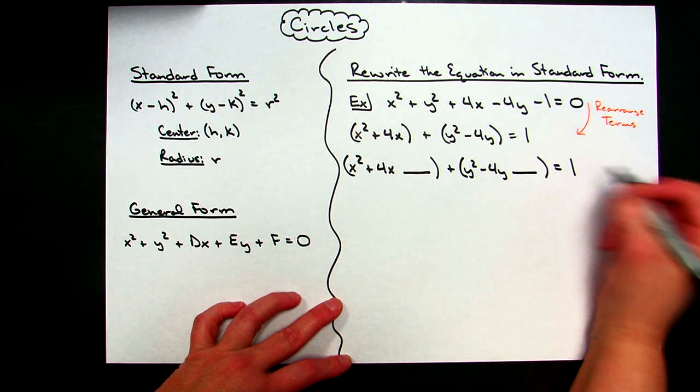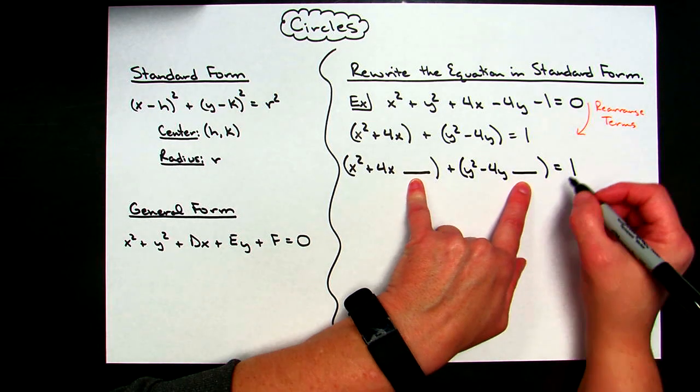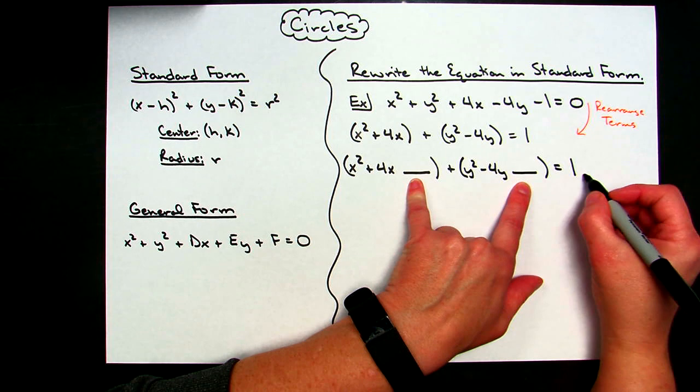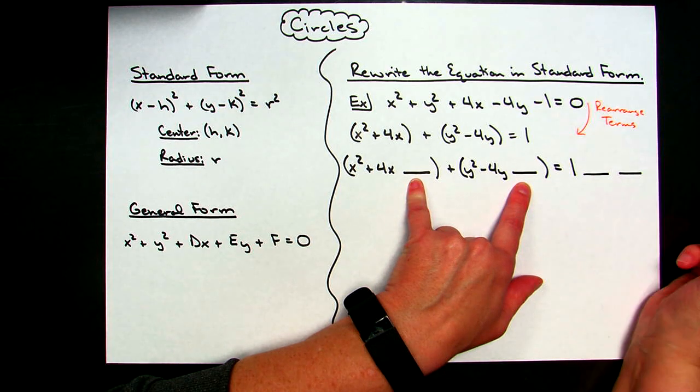I've got a 1 right here. Now, whatever I complete the square in these two places, I have to do to both sides of the equation. So I also have to do it over here. I need two more blanks over here.